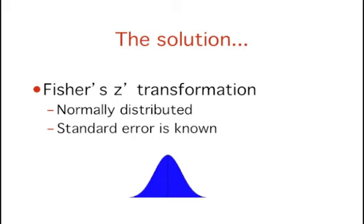The solution lies with Fisher's Z' transformation described in the section on the sampling distribution of Pearson's R. Fisher's Z' is normally distributed and has a known standard error.